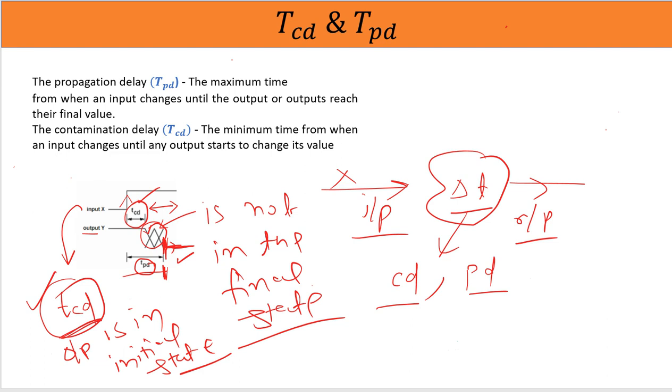And then output may keep on varying till little duration amount of time. And we are sure by the Tpd, propagation delay—Tpd means propagation delay—so from the moment input changed, and after Tpd, we are sure that we will be getting the final value.